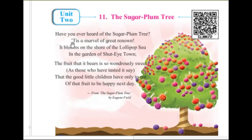Now here you can see 'it's.' Can anyone tell me what it is? Yes, it is the short form of 'it is.' The two words 'it' and 'is.' So here you can see the apostrophe on top. The apostrophe indicates that the 'i' of 'is' is missing.